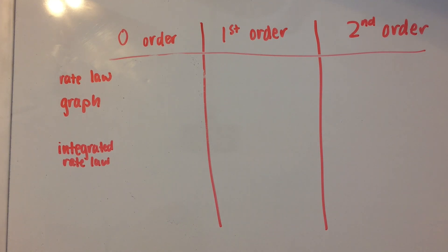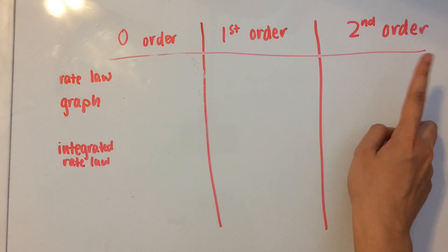Okay, so we're just going to go over the different types of characteristics for zero-order, first-order, and second-order reactions today.